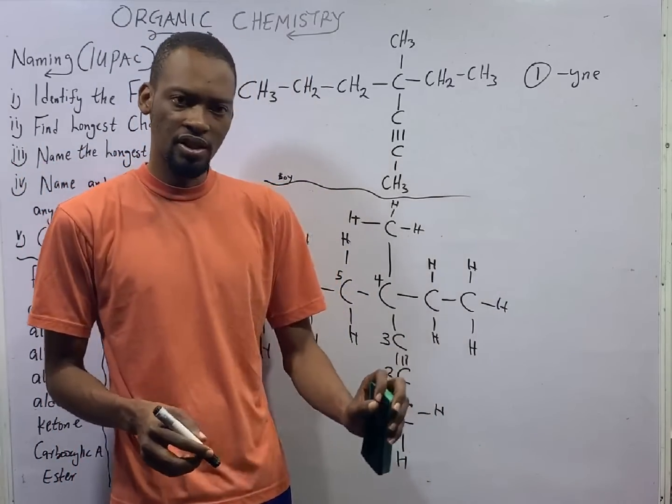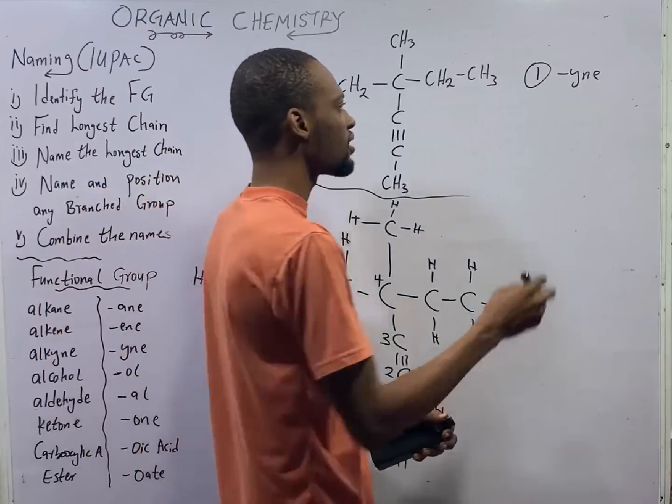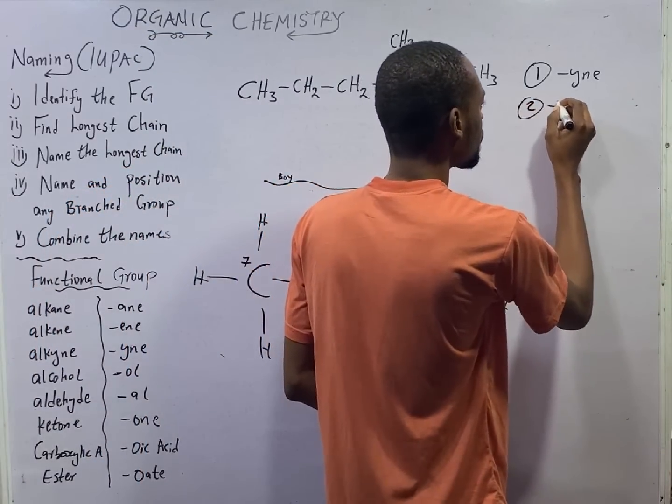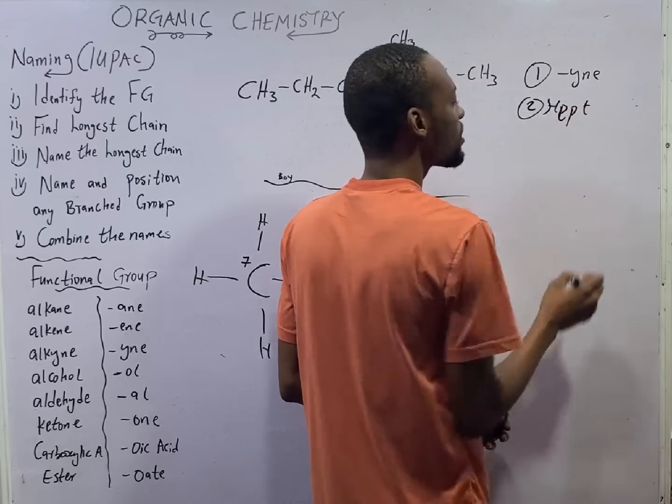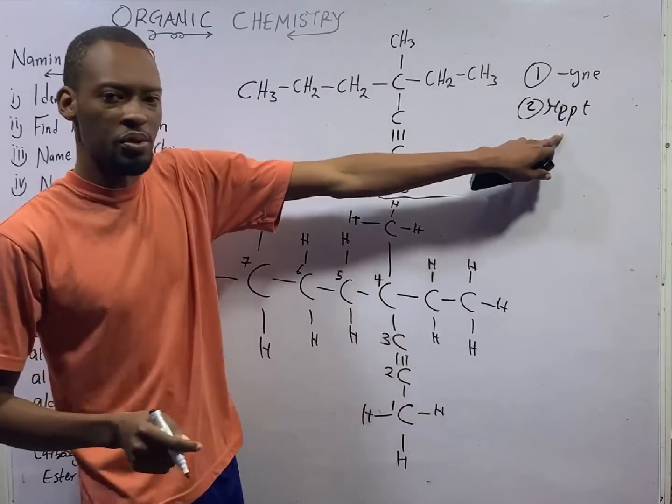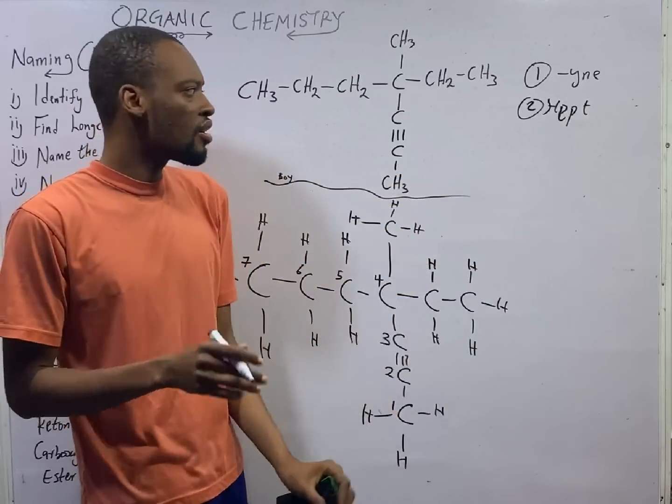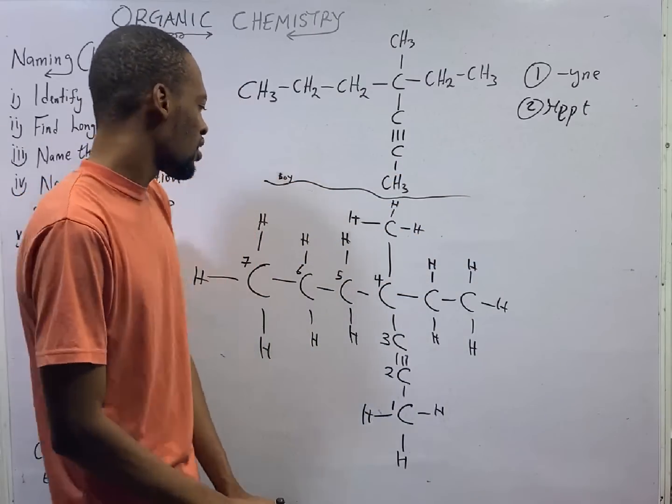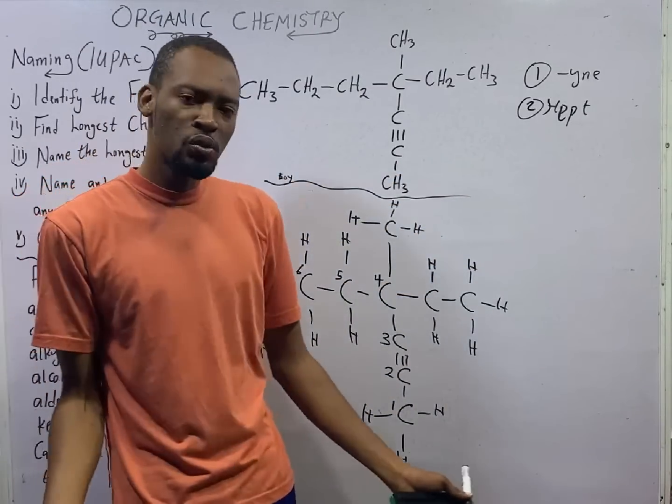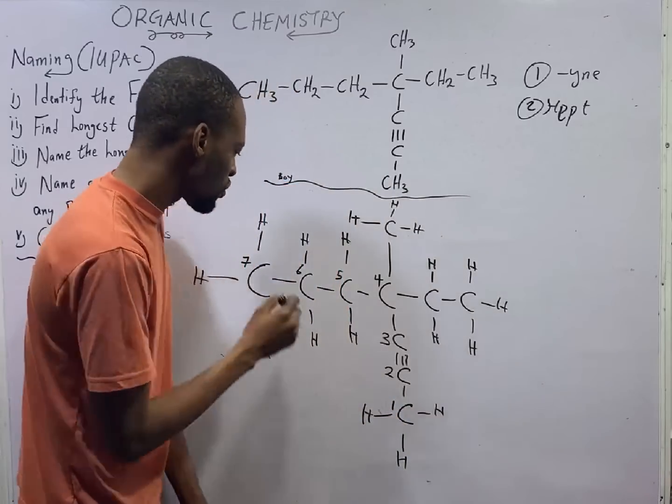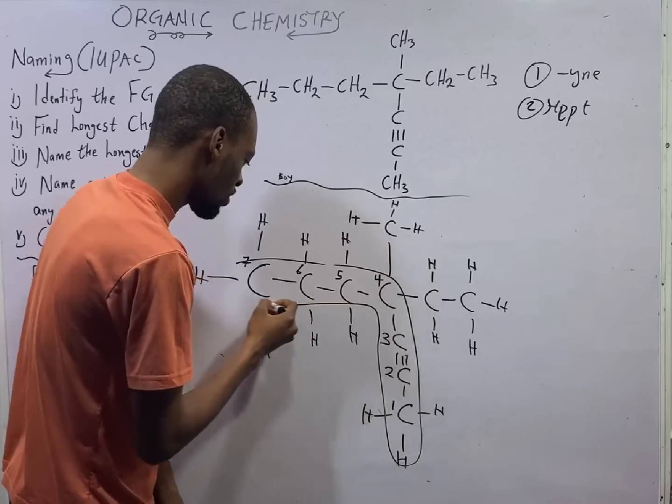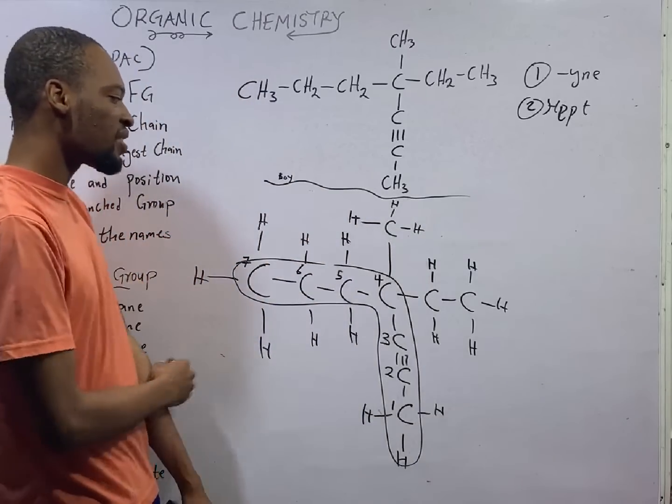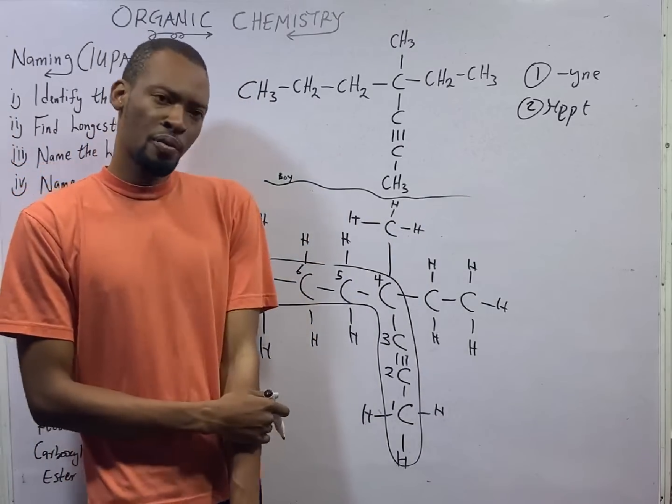Now let's name the longest chain. Seven carbon is hept. So this is the root. The longest chain is the root. Any branch? How do we know branches? Once you mark your longest chain, any other thing outside the longest chain are branches. That makes here one branch and here another branch.